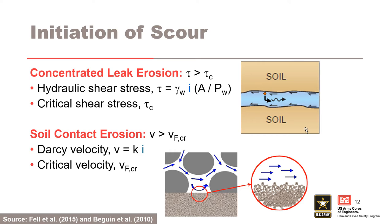For scour, you cannot just discuss hydraulic gradient. For concentrated leak erosion, hydraulic shear stress is a function of hydraulic gradient as well as pipe or crack geometry, and the critical shear stress is dependent on erodibility. For soil contact erosion, the D'Arcy velocity is a function of hydraulic gradient and horizontal permeability, and the critical velocity is based on a theoretical critical value from experiments, which is a function of particle size and porosity.